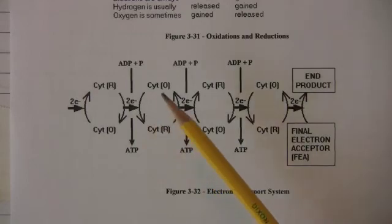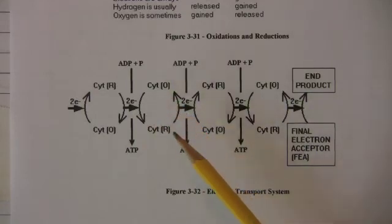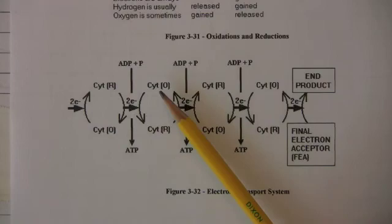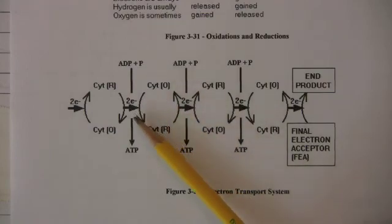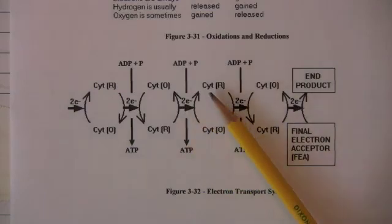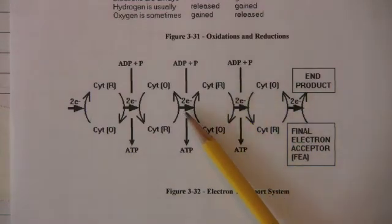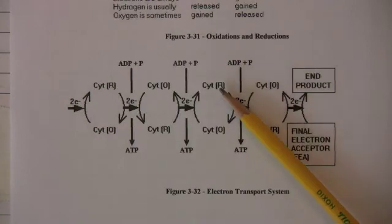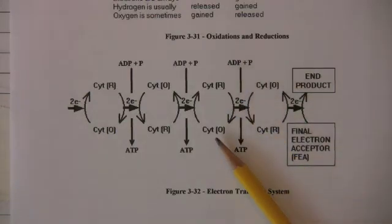Notice that each cytochrome must be transformed back into the oxidized state before it can accept electrons from the previous cytochrome. So for example, this cytochrome in the oxidized state has accepted a pair from the previous, becoming reduced. In the reduced state, it cannot accept any more electrons from the previous cytochrome. It must hand its electrons off and become re-oxidized.